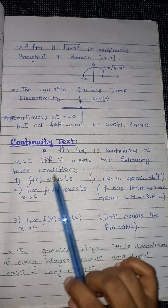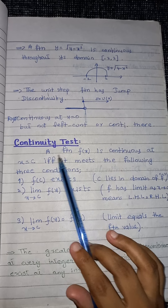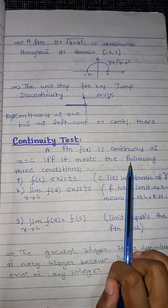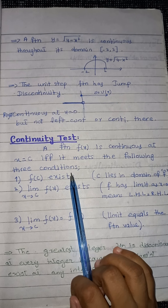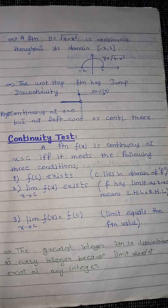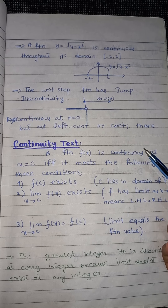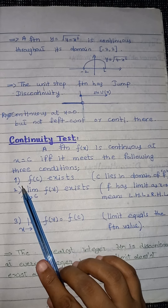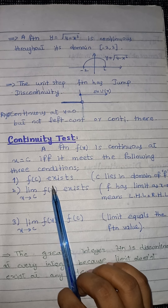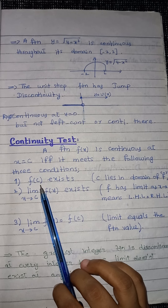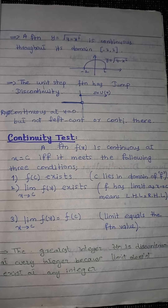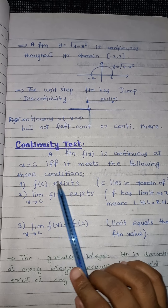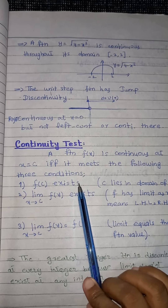Now we come to the continuity test. A function f(x) is continuous at x = c if and only if it meets three conditions. First, we have to check that f(c) exists — that is, we substitute that particular point into our function. If f(c) exists, we move to the second condition.